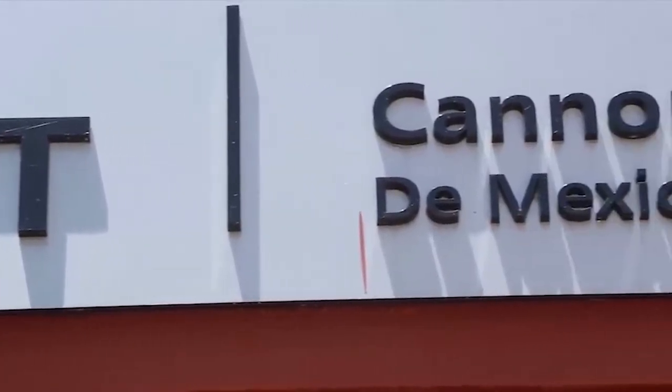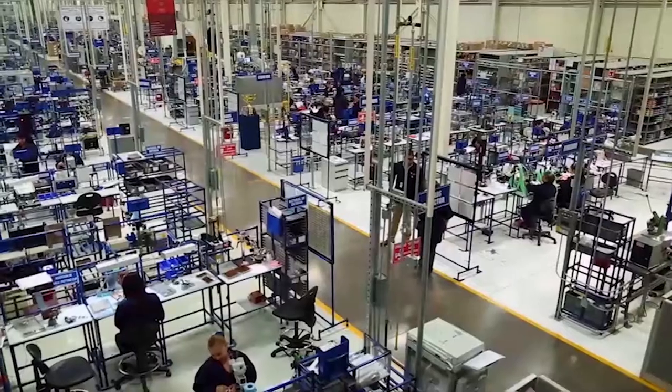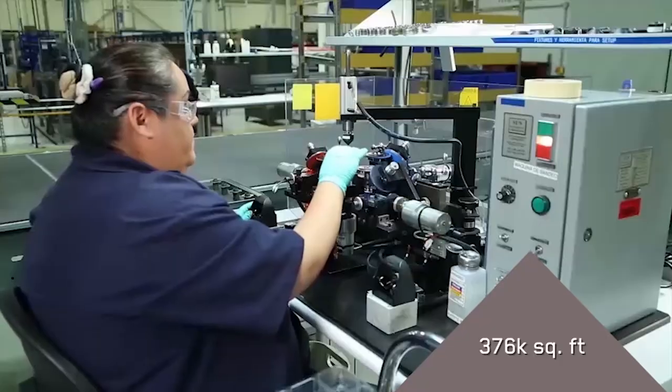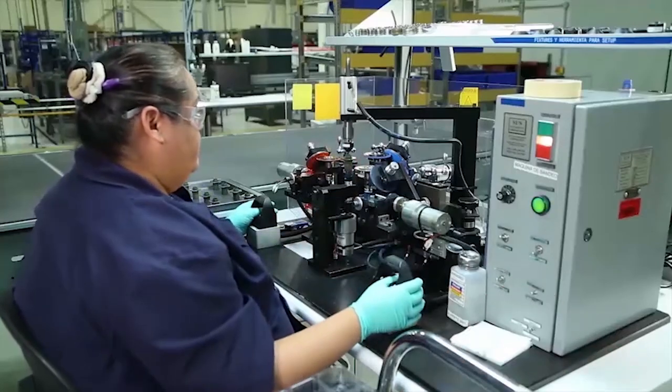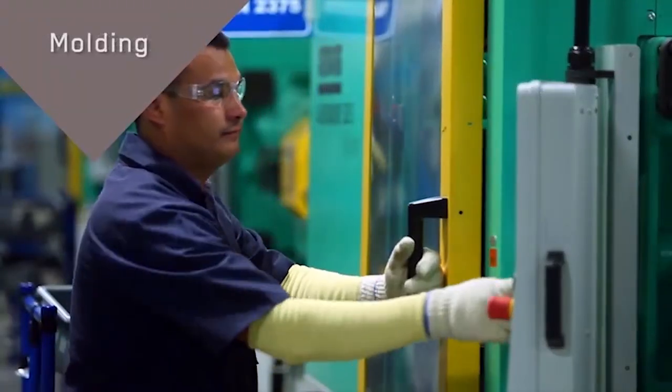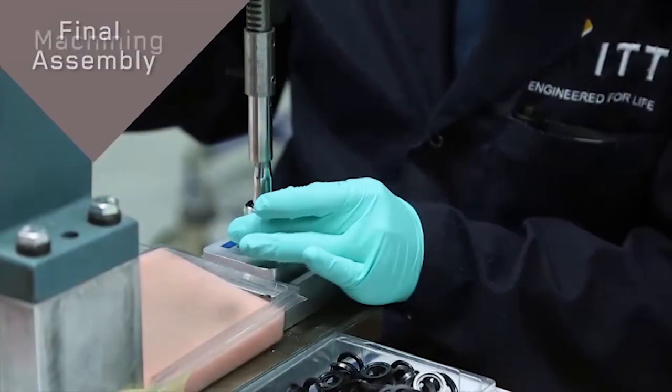ITT has been in Nogales for over 30 years. The plant has more than 376,000 square feet and over 500 skilled operators. Our processes include die cast, molding, final assembly, and machining.